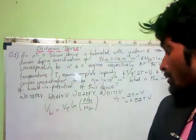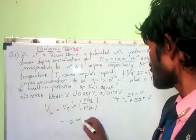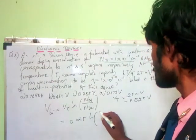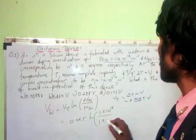And n_d1 is 10 to the power 18 per centimeter cube, and n_d2 is 10 to the power 16. So you just have 0.025 ln of 10 to the power 18 divided by 10 power 16.